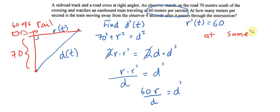So at some time, this would be the situation that we have. Here's the road, this horizontal length here is still the railroad, this is our observer here. This length is still 70.